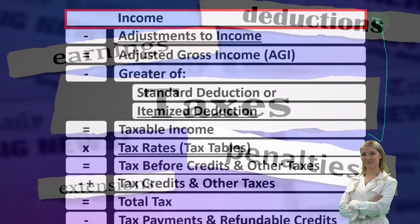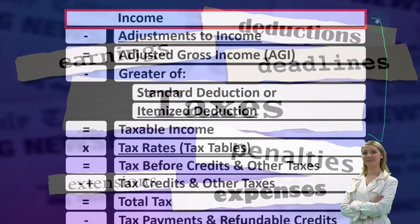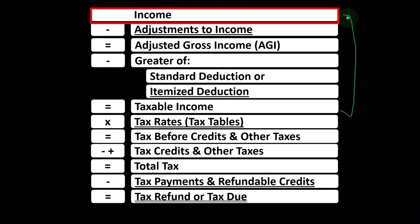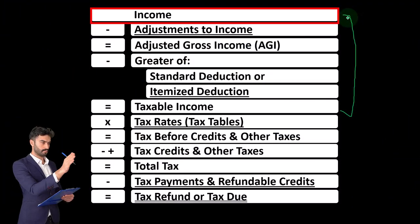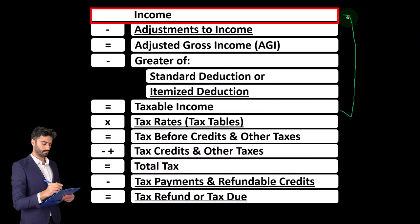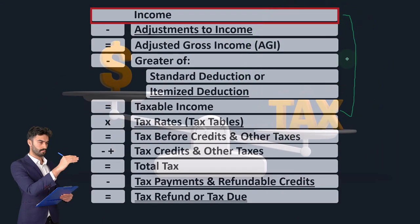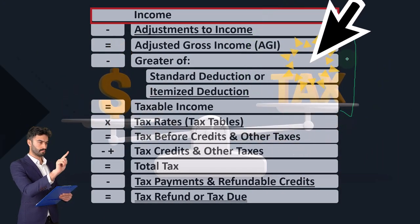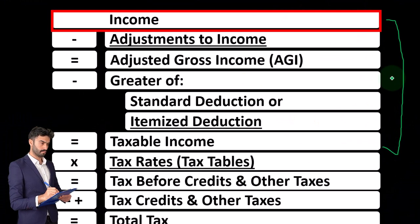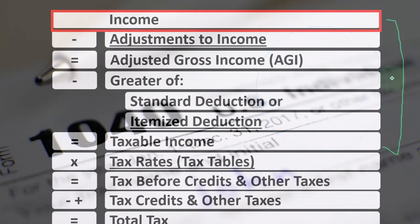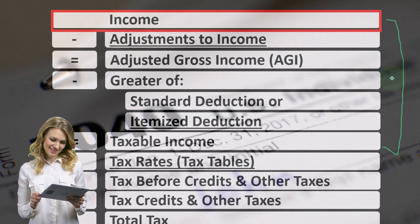Here we're going to be touching on business income, often reported on a Schedule C. This is a good point to look at the situation where we might have deductions that aren't part of this line item in terms of the income tax formula, because there are going to be deductions on the other schedule. So this gets a little messy, a little bit confusing. We'll dive into it a lot more in future presentations.